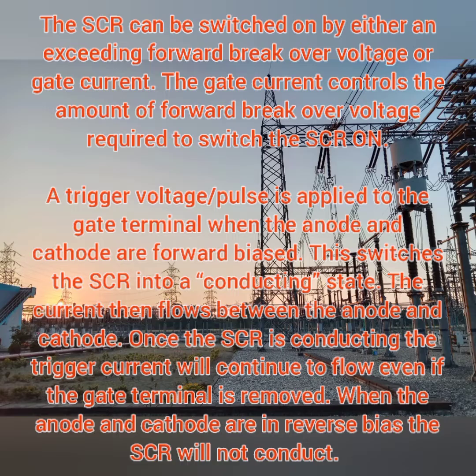In forward conducting state, junctions J1 and J3 will be in a forward conduction state and J2 will be in reverse conduction state. Normally the SCR can be switched on by either exceeding the forward breakover voltage or by a gate current. The gate current controls the amount of forward breakover voltage required to switch on the SCR. A trigger voltage or pulse is applied to the gate terminal when the anode and cathode are in forward bias — this switches the SCR into conduction. Once conducting, current flows between anode and cathode, and will continue even if the gate signal is removed.